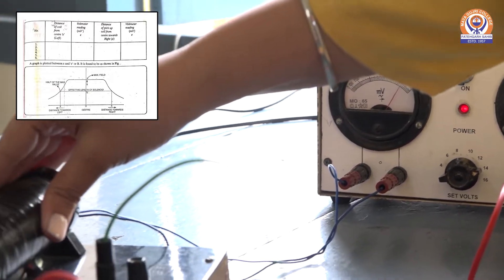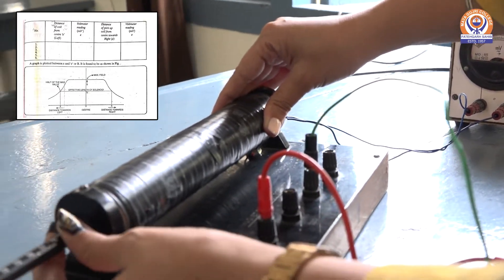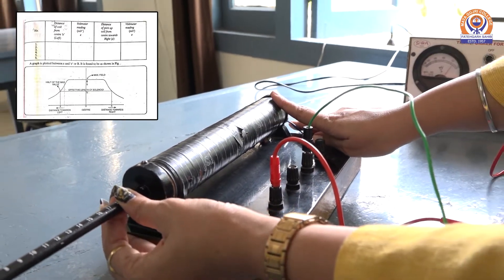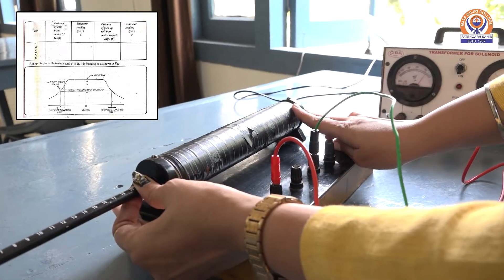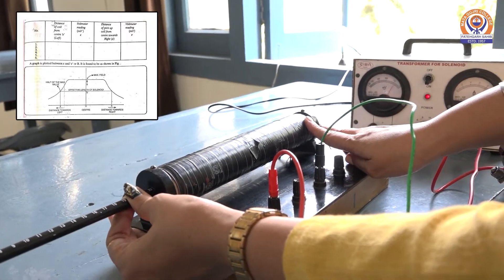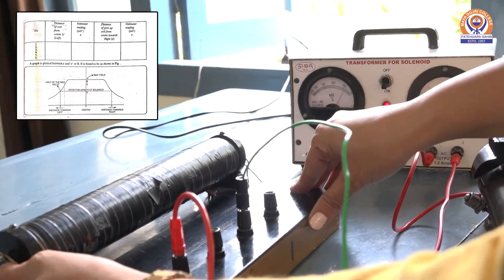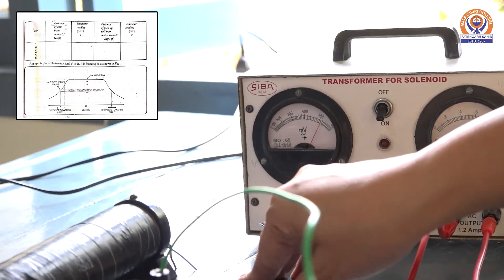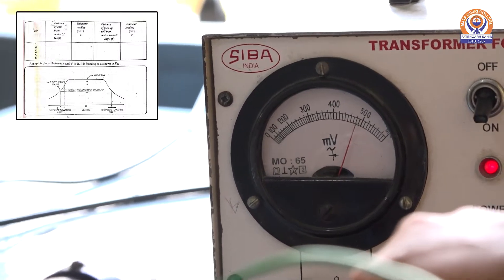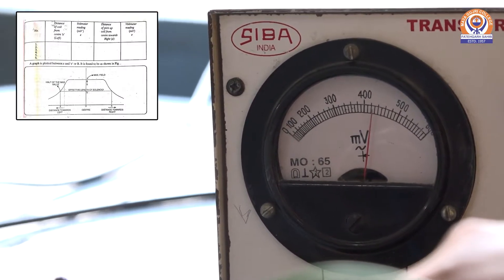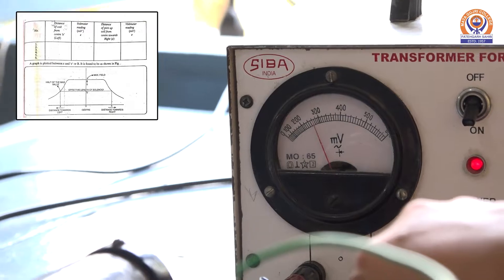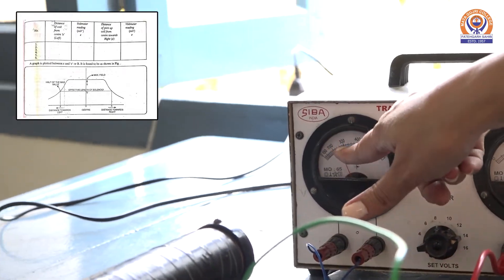And when I gradually change the distance towards left, this value will be constant up to certain distance. Up to 8 centimeter, it is 520. Then after that, at 10 centimeter, it is reduced to 400. At 12 centimeter, it is reduced to 250.